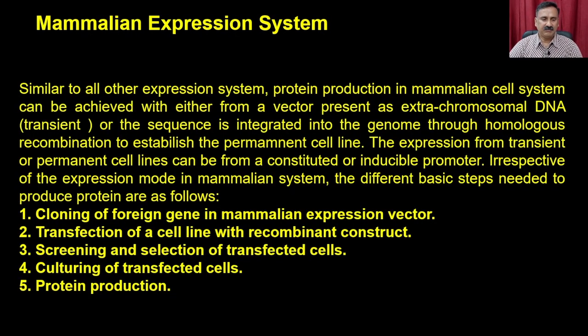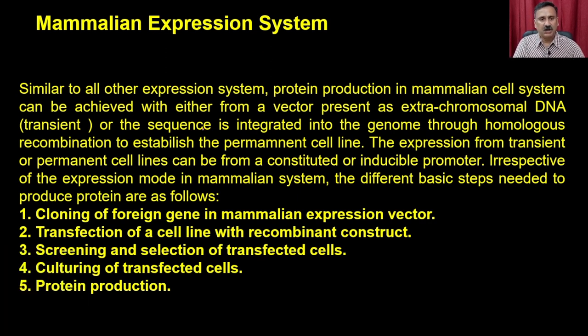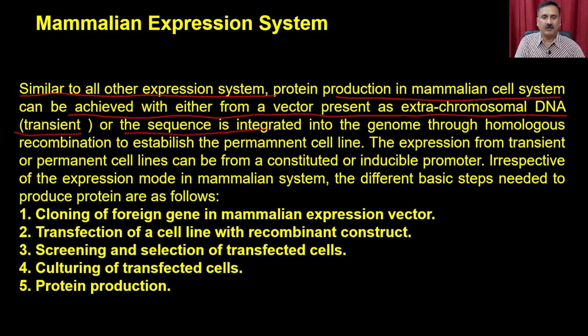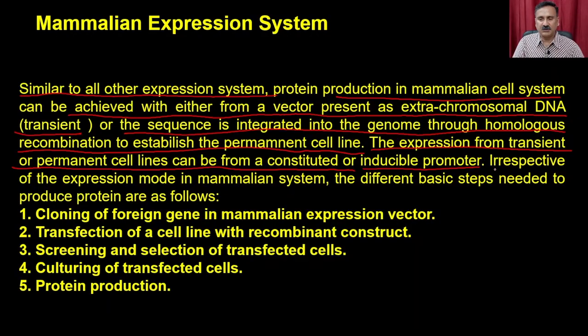Mammalian expression system, as the name suggests, utilizes different types of mammalian cells for protein production. Similar to other expression systems, protein production in the mammalian expression system can be achieved either from a vector present as extrachromosomal small DNA, which gives transient expression, or the sequence is integrated into the genome by homologous recombination to establish permanent cell lines. The expression from transient or permanent cell lines can be from a constitutive or inducible promoter.